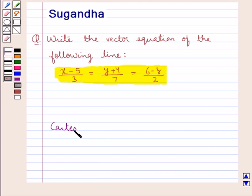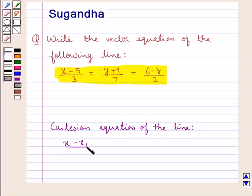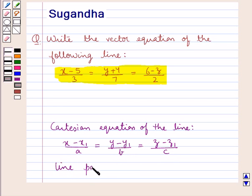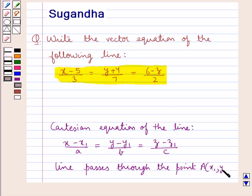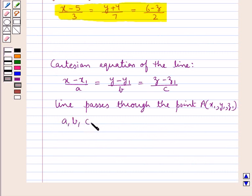The Cartesian equation of the line is given by x minus x1 upon a is equal to y minus y1 upon b is equal to z minus z1 upon c. This shows that the line passes through a point A with coordinates x1, y1, z1, and a, b, c are the direction ratios of the line.